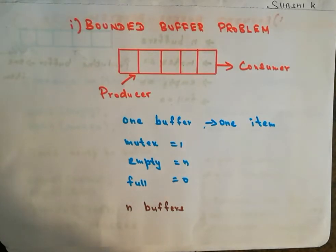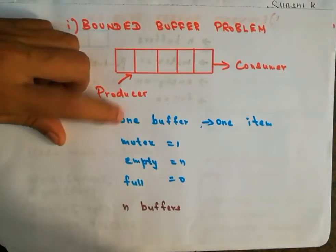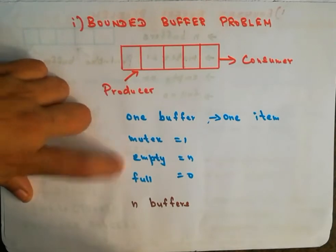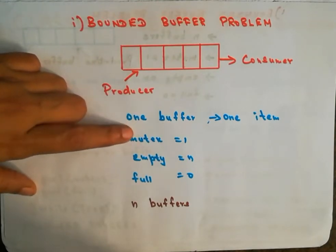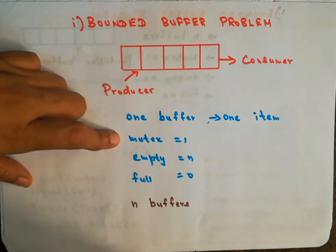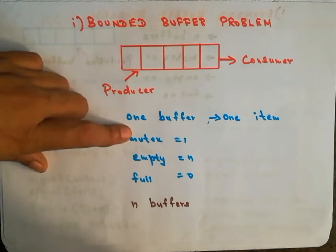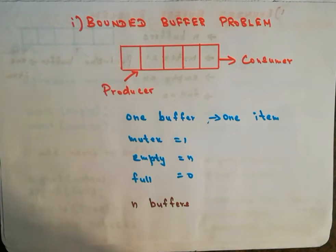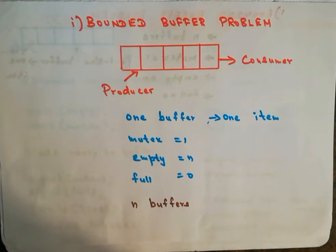There are some initial assumptions made in this bounded buffer problem. We have n buffers, each capable of holding one item, and three semaphores. First, there is a mutex semaphore for mutual exclusion, initialized to 1, meaning no process is currently in its critical section. Second, there is an empty semaphore initialized to n, indicating all n buffers are initially empty. Third, there is a full semaphore initialized to 0, meaning no items have been produced yet.